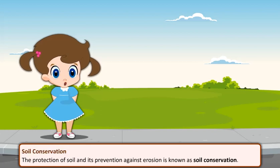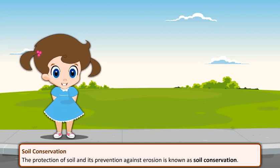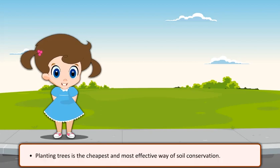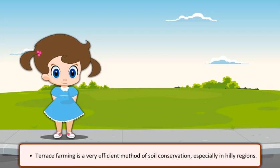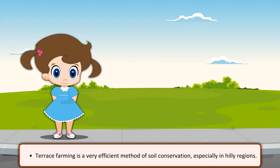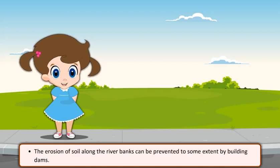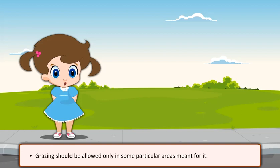Soil conservation. The protection of soil and its prevention against erosion is known as soil conservation. Planting trees is the cheapest and most effective way of soil conservation. Terrace farming is a very efficient method, especially in hilly regions. The erosion of soil along river banks can be prevented to some extent by building dams. Grazing should be allowed only in particular areas meant for it.